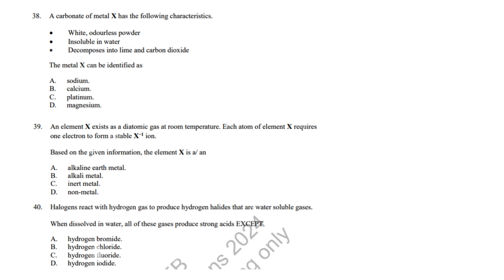Question 38: Calcium carbonate, CaCO3, decomposes into lime, CaO, and CO2. Correct answer: B, Calcium. Question 39: Halogens, like chlorine, exist as diatomic gases and form negative 1 ions. Correct answer: D, Non-metal.